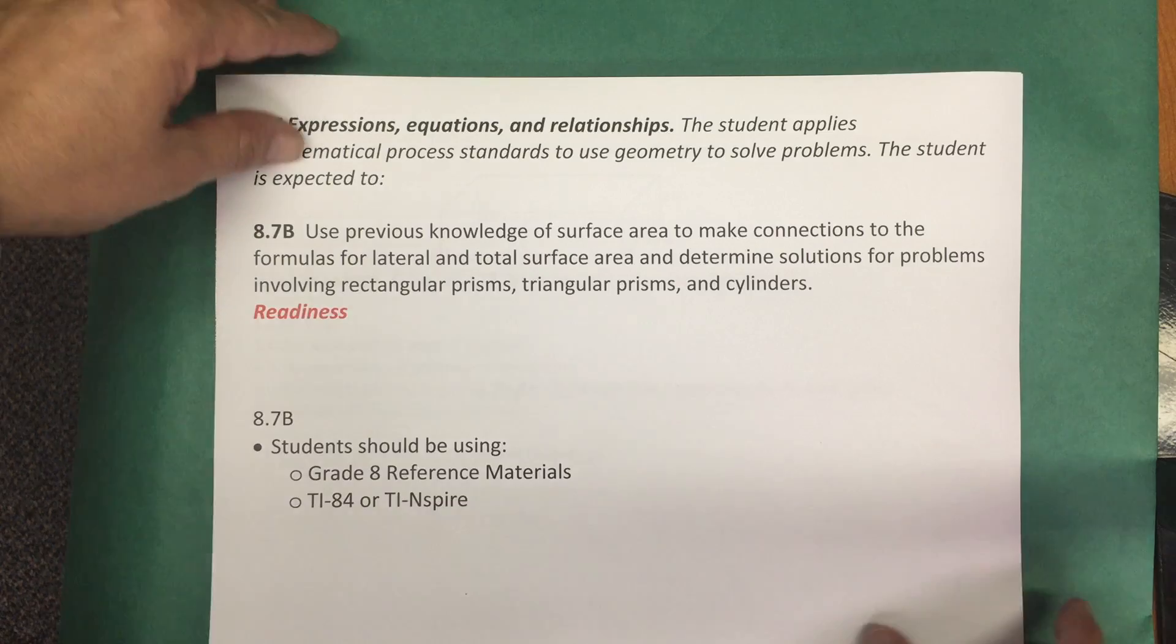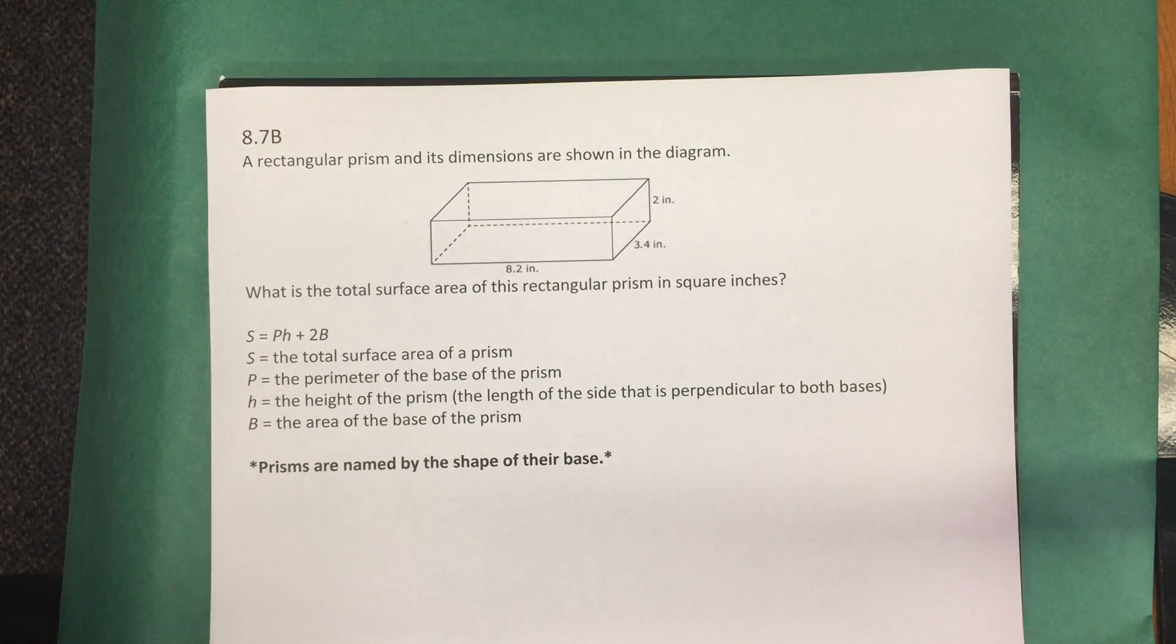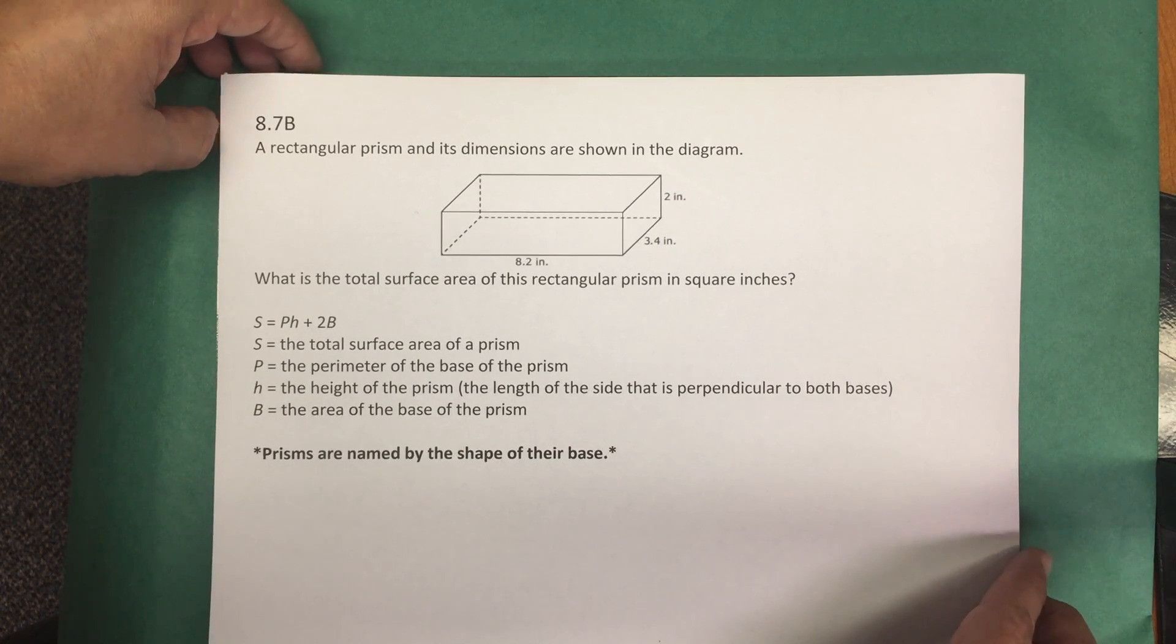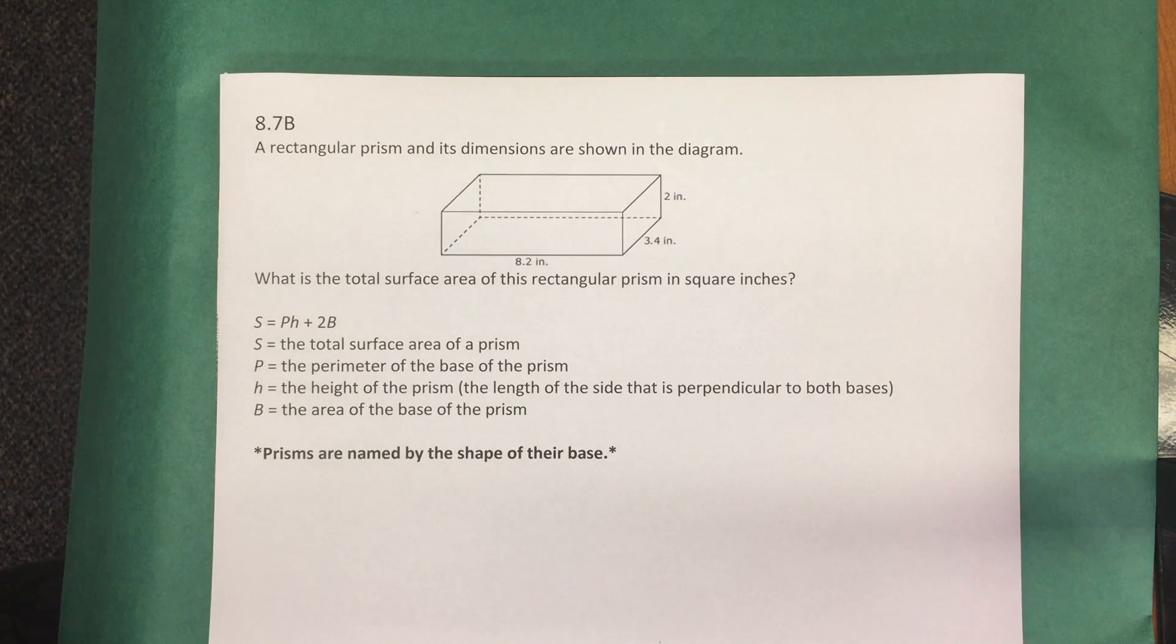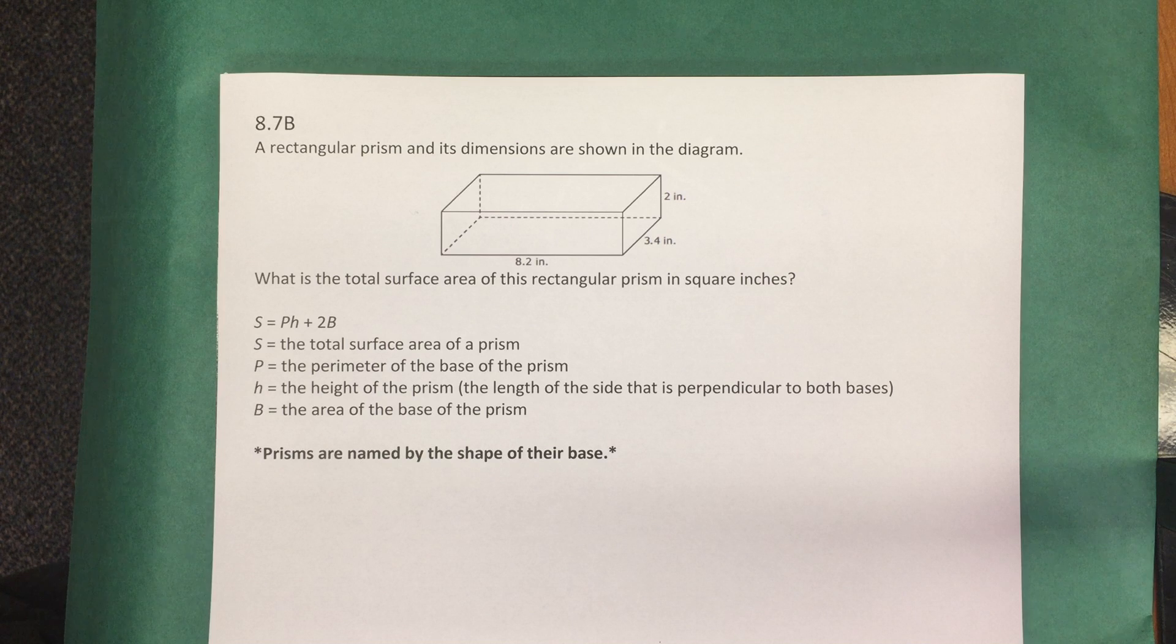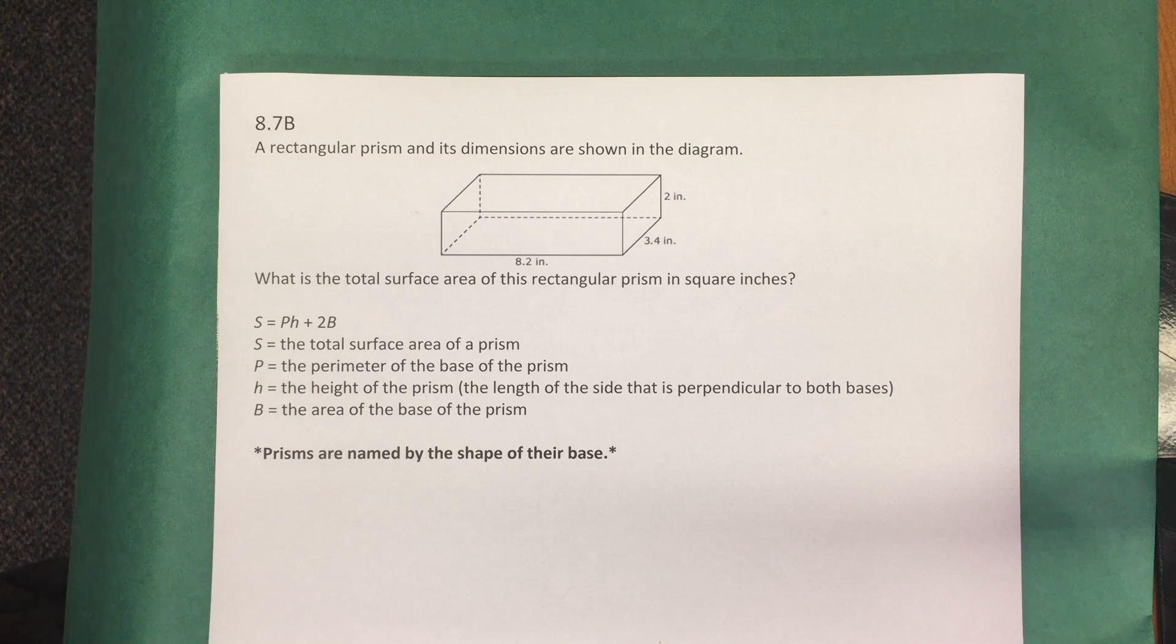We're going to look at an example from the released STAAR assessment items from the 2016 March assessment. The problem says a rectangular prism and its dimensions are shown in the diagram. What is the total surface area of this rectangular prism in square inches?